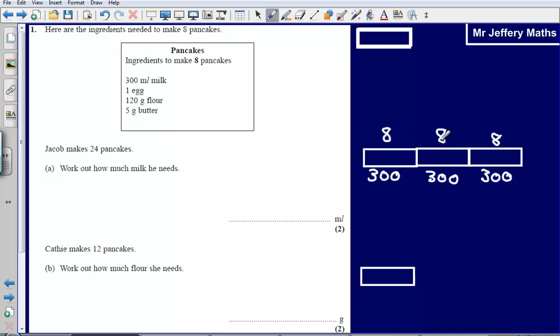Well that gives me 8, 16, 24, so that's the number of pancakes that I need to make. So how much milk do I need? Well I need 300 to make the first 8, another 300 to make it up to 16, another 300 to make it up to 24. So I need 900 milliliters of milk.